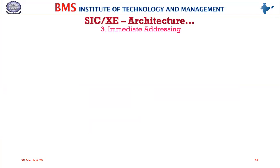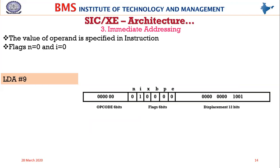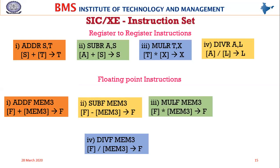Immediate addressing is where the operand is specified in the instruction itself. Here the n bit is 0 and i bit is 1. For example, the instruction LDA #9 indicates that the value 9 should be loaded onto the accumulator — the hash indicates immediate addressing mode. So n is 0, i is 1, x is 0 (indexed addressing cannot be used with immediate), b is 0, p is 0, e is 0 because it's a format three instruction, and in the 12-bit displacement place we write the actual value 9.